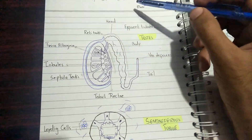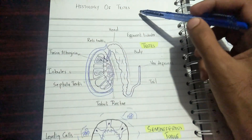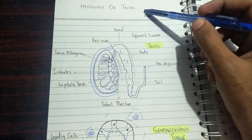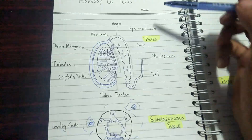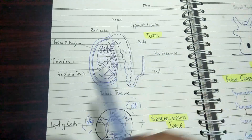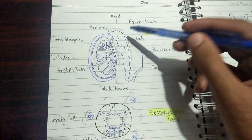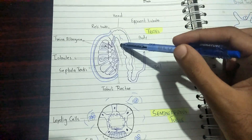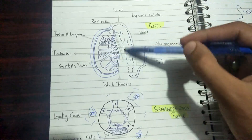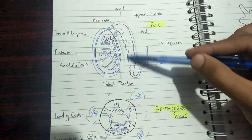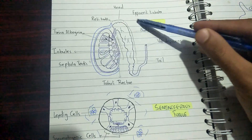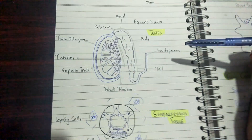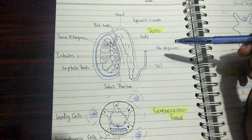Hello everyone, from Med Video's crash course. Today we have a topic known as histology of testes. In this topic, we basically have a tubular system and a testicular system — a system inside the testes and a system outside the testes.